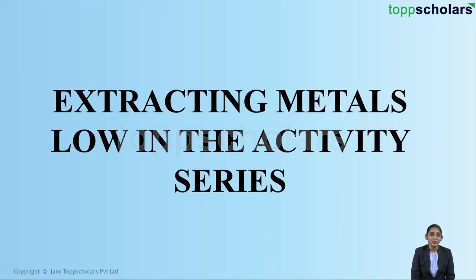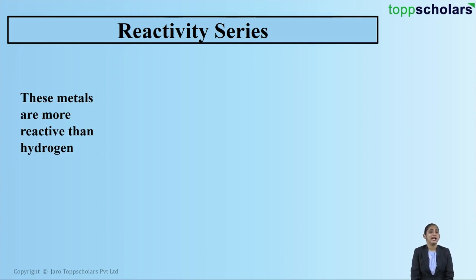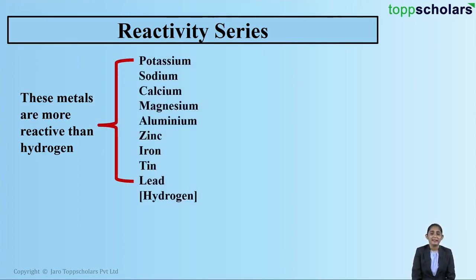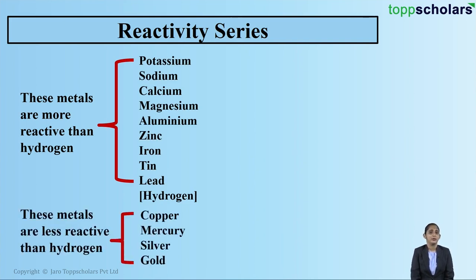Hello, my dear friends! Welcome to Top Scholars. Today we'll be discussing extracting metals low in the activity series. The reactivity series is simply a series wherein metals are arranged in an increasing or decreasing order of their reactivity. Metals which are more reactive than hydrogen are placed above hydrogen, whereas metals which are less reactive than hydrogen are placed below hydrogen.